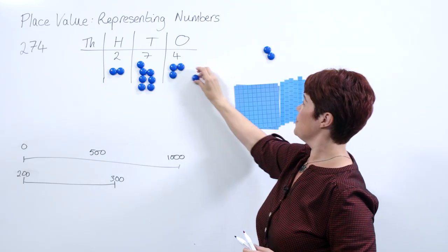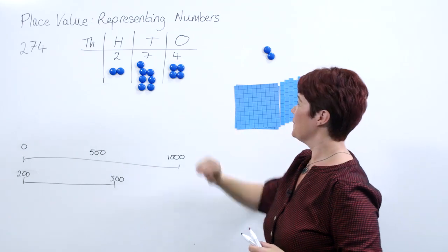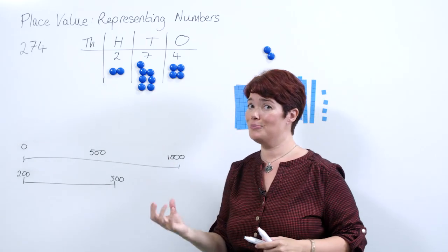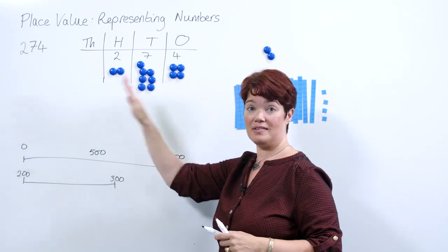Just a little reminder: it's the ones column, not the units column. If you're using Numicon, I've arranged these in the shapes of your Numicon, so that might be useful as well to start pupils off.